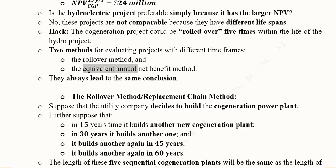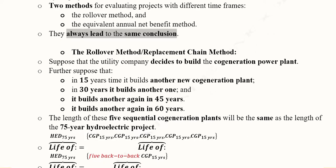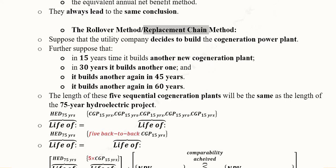The second method is the equivalent annual net benefit method, which calculates a kind of average. The result in both cases will favor the same project. The first method — the rollover or replacement chain method — addresses our example by repeating the co-generation plant a number of times in order to create an equivalence in time span between the hydroelectric dam and the co-generation plant.